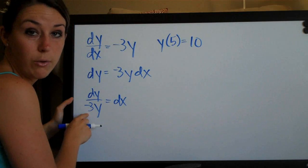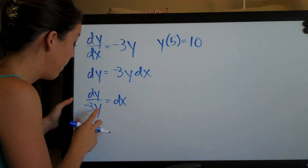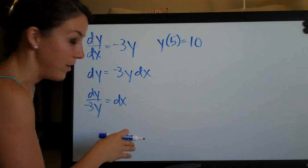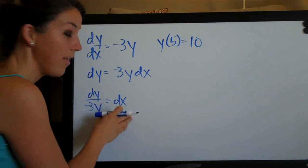And it doesn't matter where that negative 3 goes because all that matters is that you're pulling y's and x's apart, not where anything else in the equation is. So as long as we've got y's on the left and x's on the right.